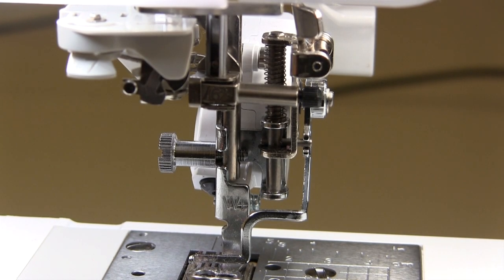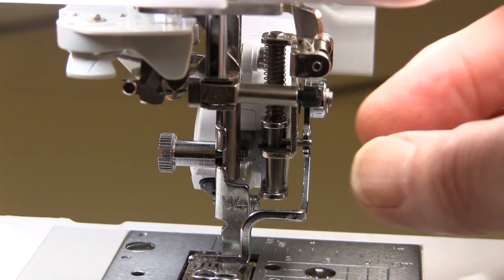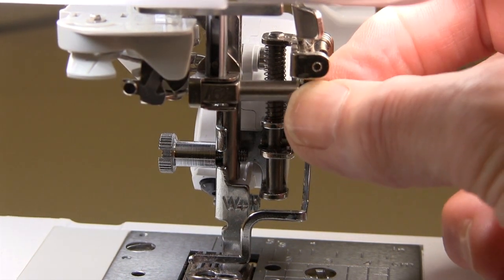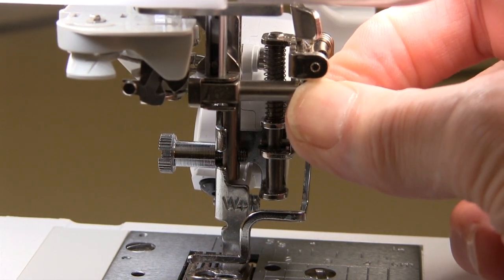To make this adjustment, remove your needle from the machine and tighten the screw back up so that the mechanism is tight.